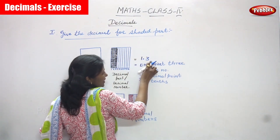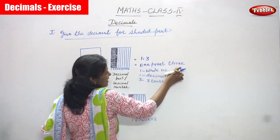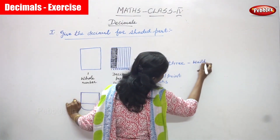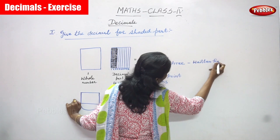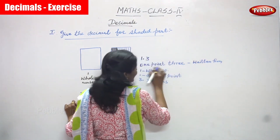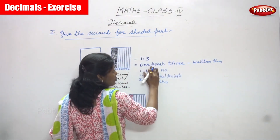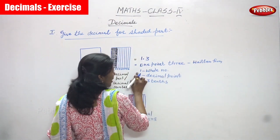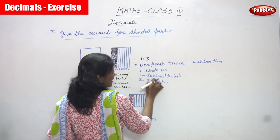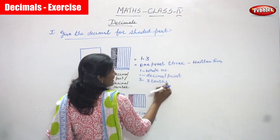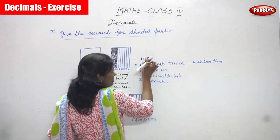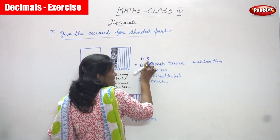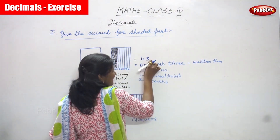The answer is 1.3. So 1.3 is the written form, and you can also read it as 1.3. One is a whole number, point is a decimal point, and 3 means 3 tenths. After the point, the first digit that comes — how could you read this digit? It is called 3 tenths.